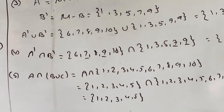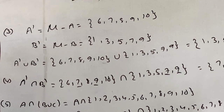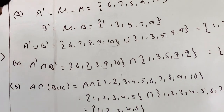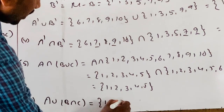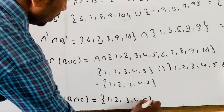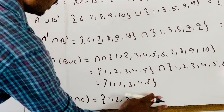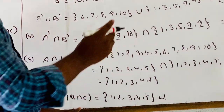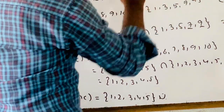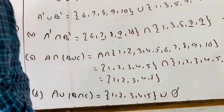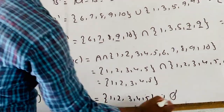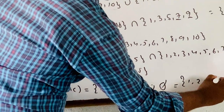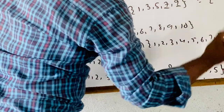Sixth: A union (B intersection C). B intersection C equals phi (already found). Then A union phi: A is {1, 2, 3, 4, 5} union phi. The combination means the value is {1, 2, 3, 4, 5}.